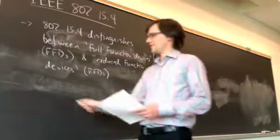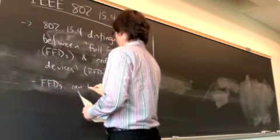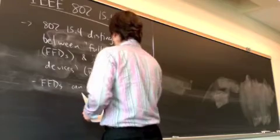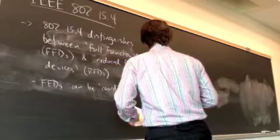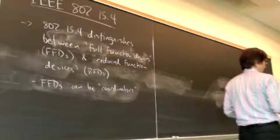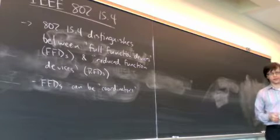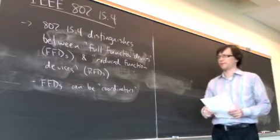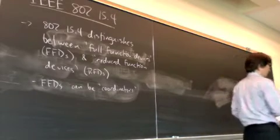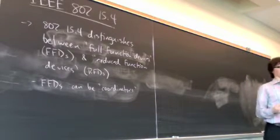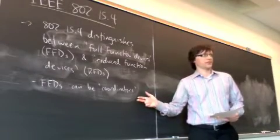So the distinction here is that the full function device can be what are called coordinators. And that basically means the network hub. So we talked about Bluetooth a few classes ago, and we saw that the master in the Bluetooth network was basically the hub of the network. That's something like what a coordinator is in this network.